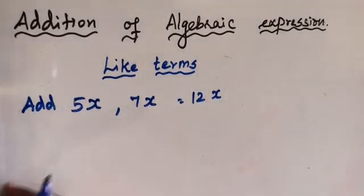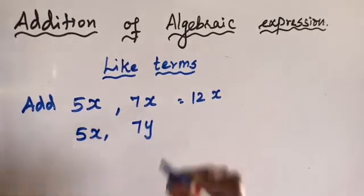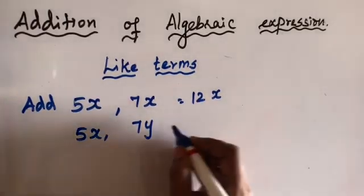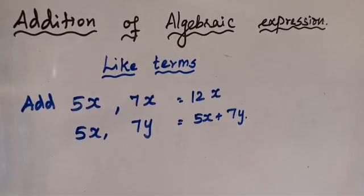But you couldn't add 5x and 7y. This thing you couldn't add. But how can we write it? 5x plus 7y. Like this we can write it.